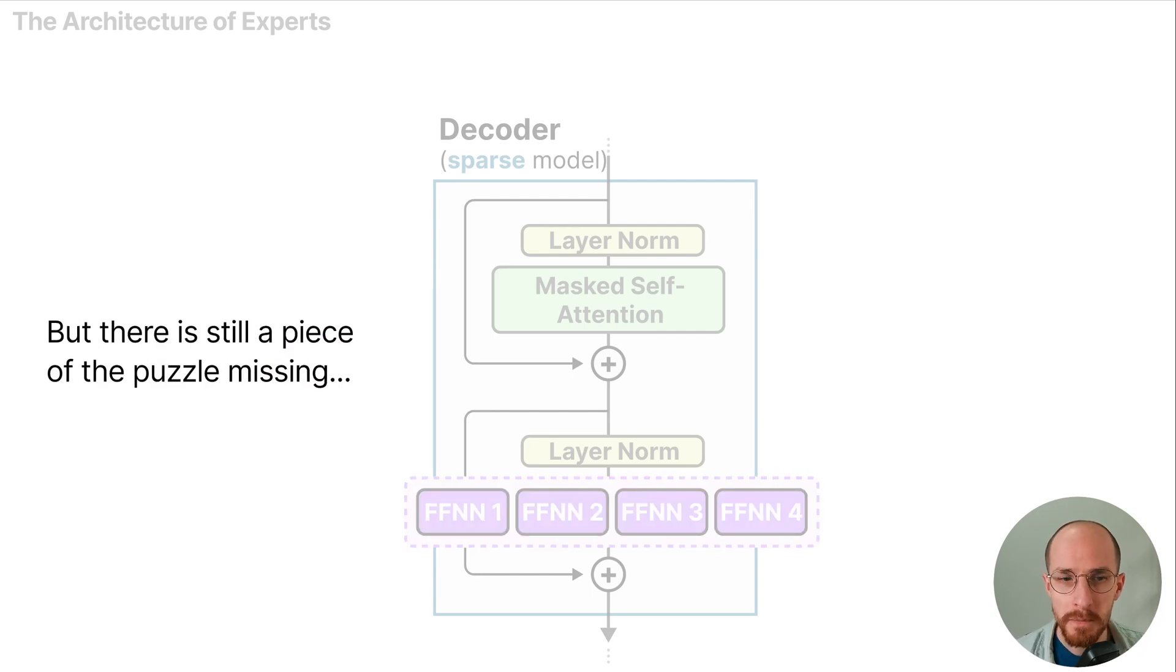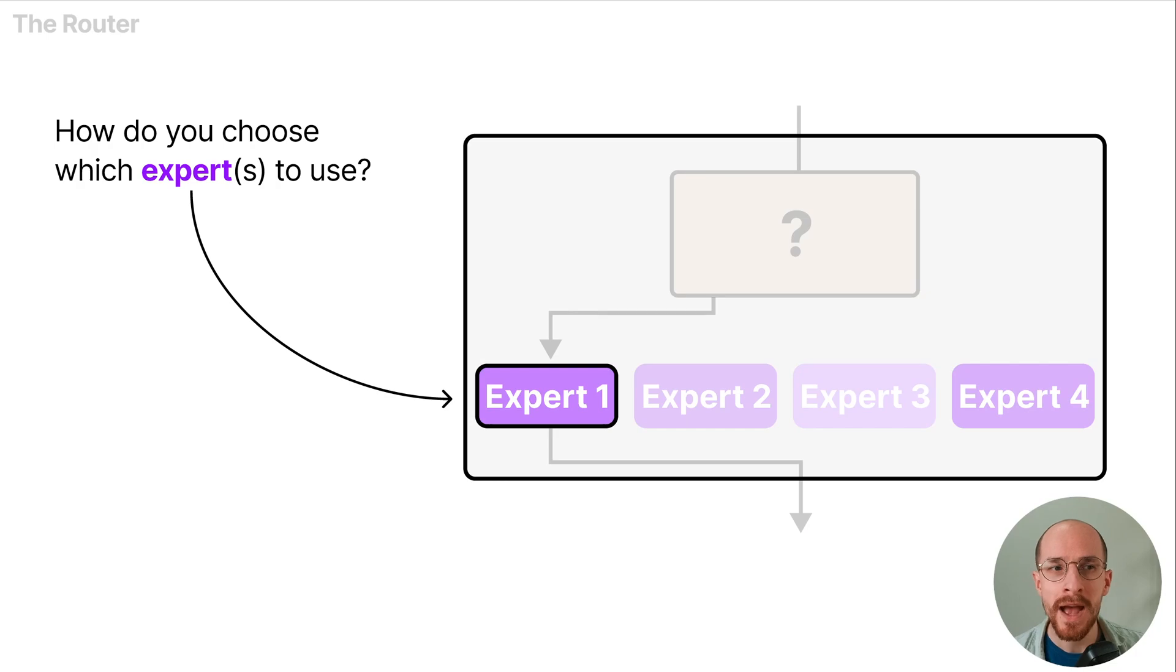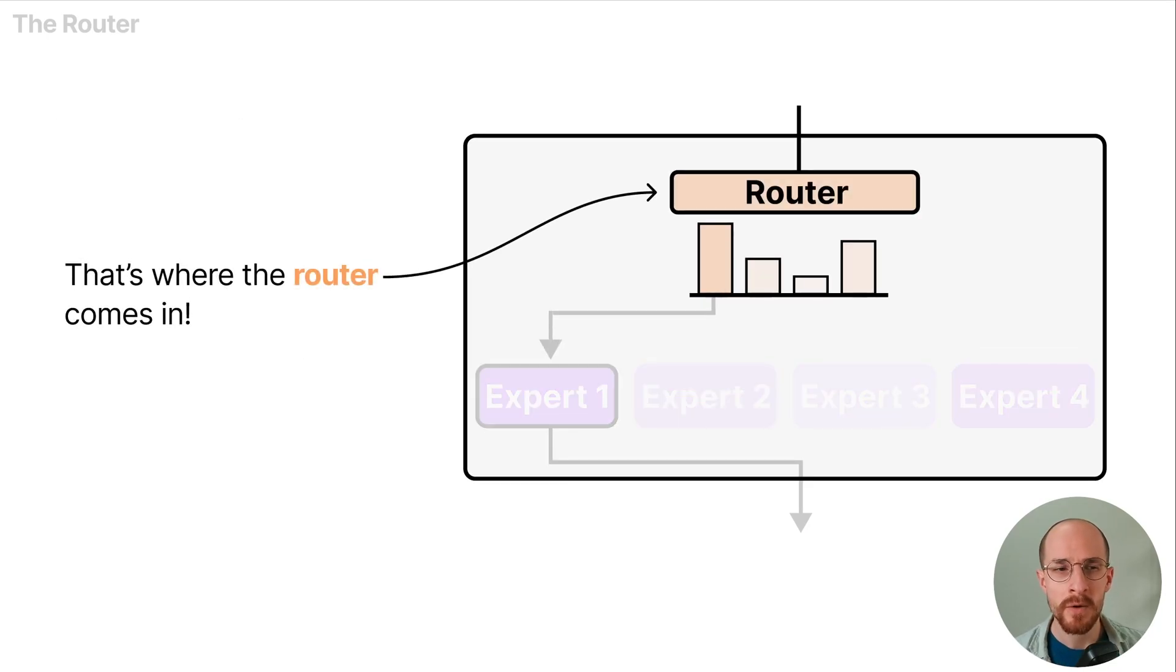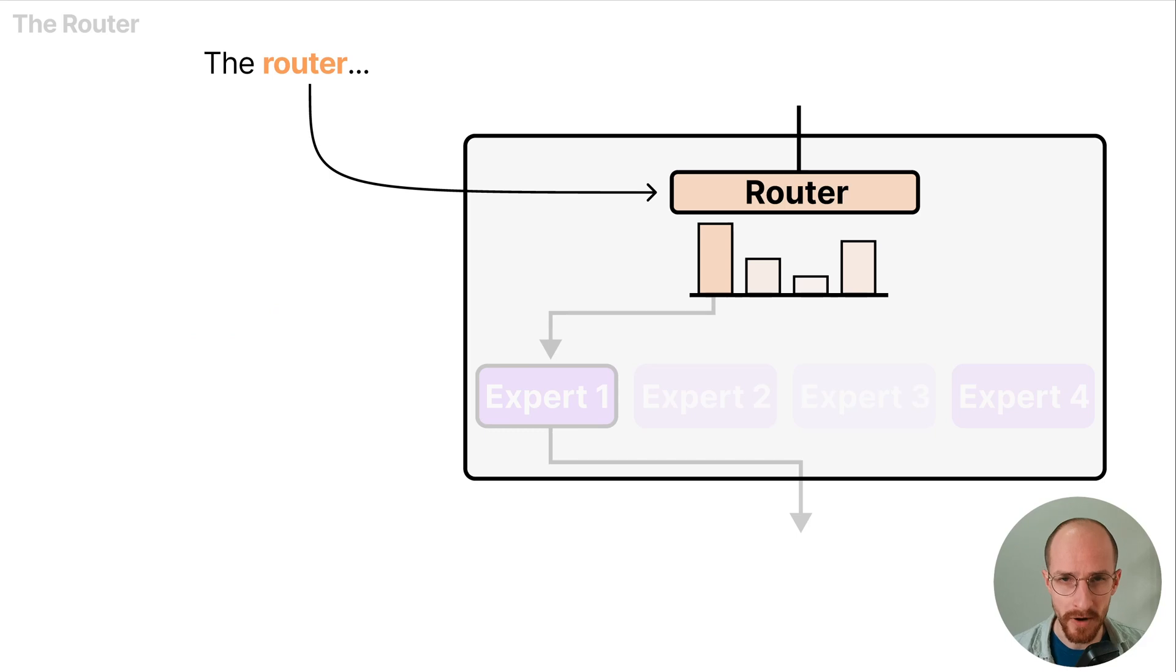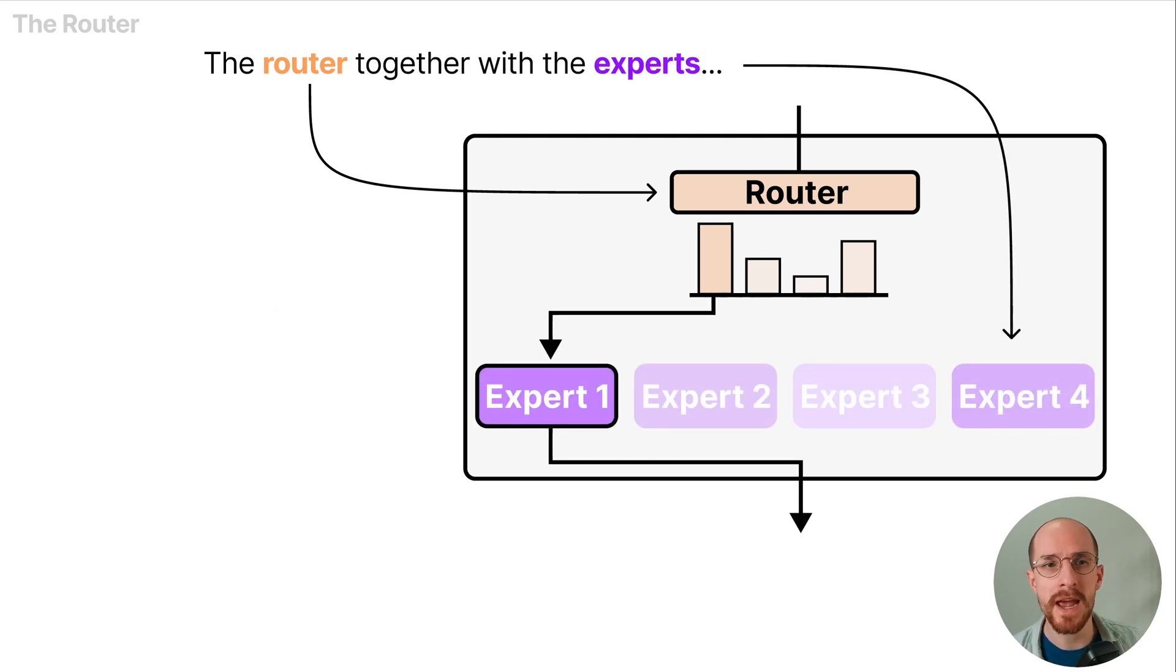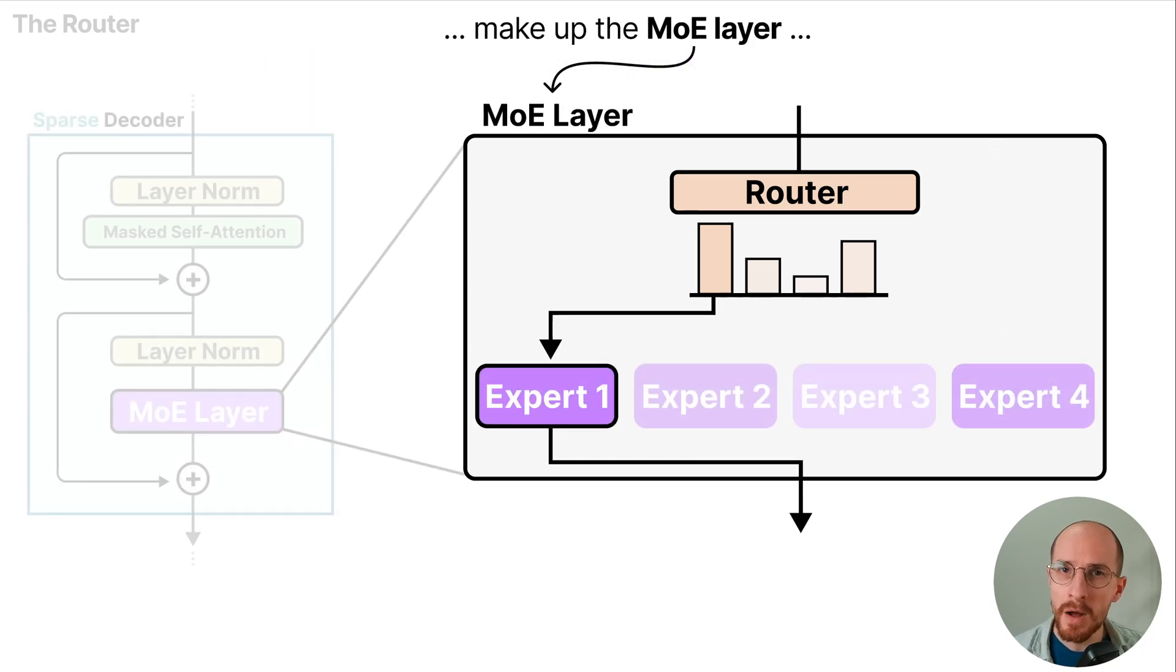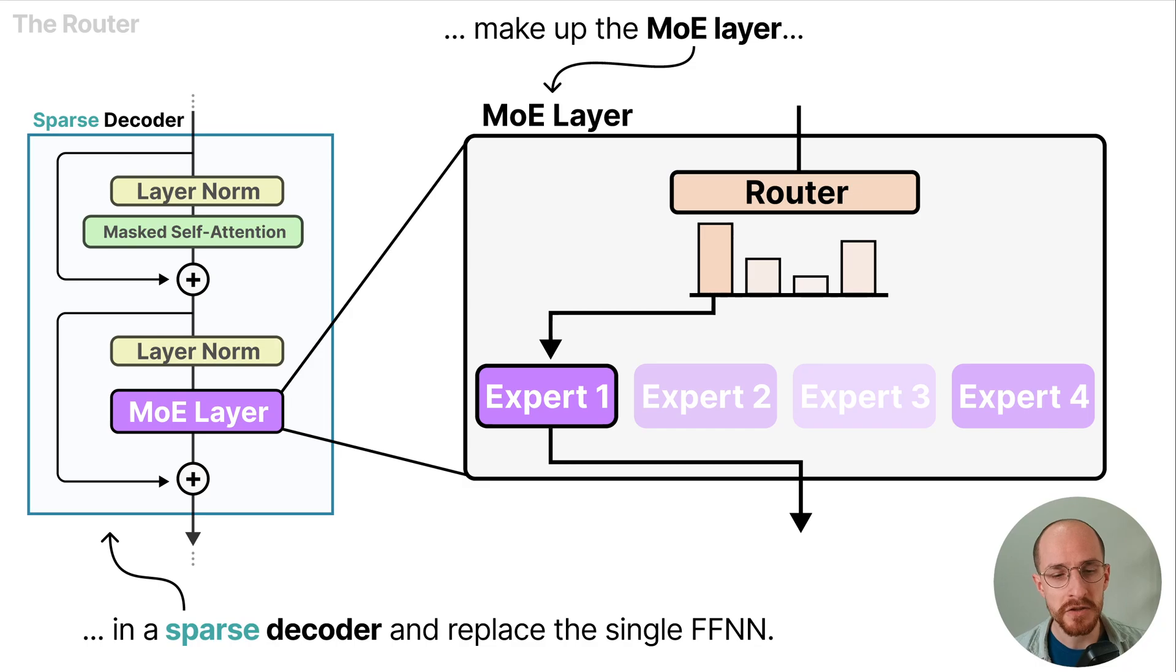But there's still a piece of the puzzle missing. How do you choose which experts to use? Well that's where the router comes in and it helps us decide which expert is best suited for a given input. The router together with the experts make up the MoE layer in a sparse decoder and replace the single feed forward neural network.